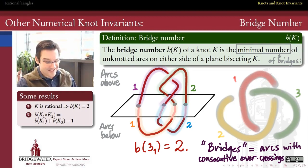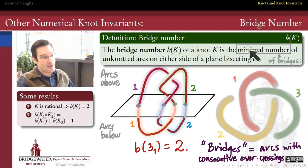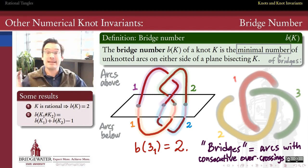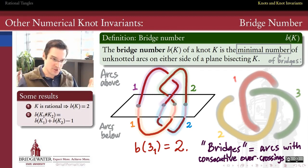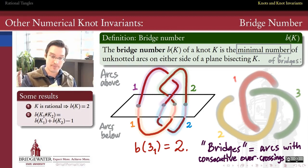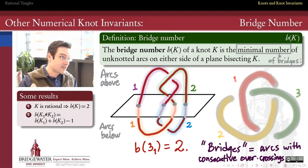In this diagram of the trefoil, I have actually three bridges. Each one of these arcs is a bridge because each makes an overcrossing with another strand. That leads to the unsatisfying prediction that the bridge number of the trefoil is three, when in fact by the original definition the bridge number should be two. This is where the minimality clause comes in: the bridge number is the minimum number of bridges, in this sense, in any diagram of the knot. We can change the diagram using Reidemeister moves and planar isotopies to find a diagram with fewer bridges.